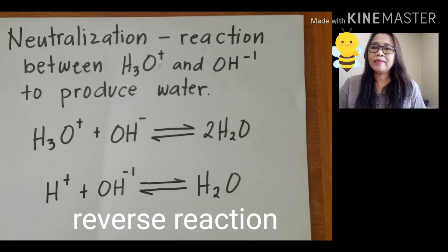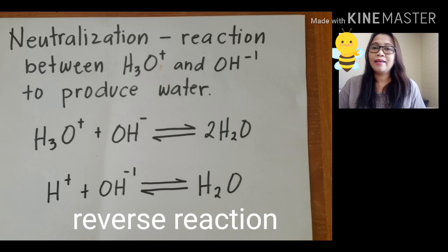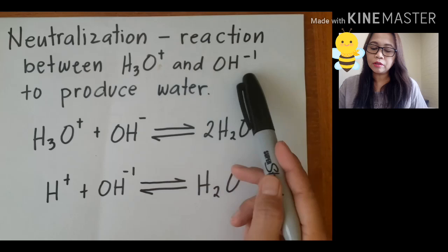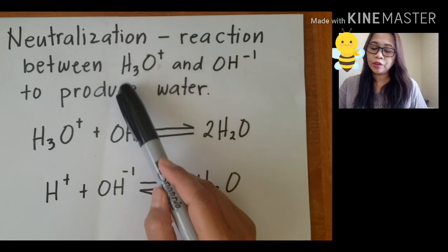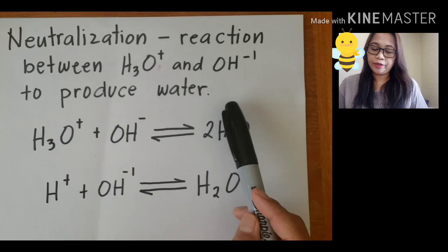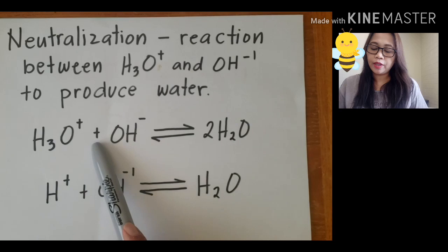Hello everyone and welcome back to my channel. Today we're going to have the continuation of neutralization and salts. Based on our discussion yesterday, we said that neutralization is the reaction between hydronium ion and hydroxide. If there's a reaction between hydronium ion (H3O+) and hydroxide (OH-), it will produce water. In this equation, you will see that hydronium ion reacts with the hydroxide and gives you a product of water.